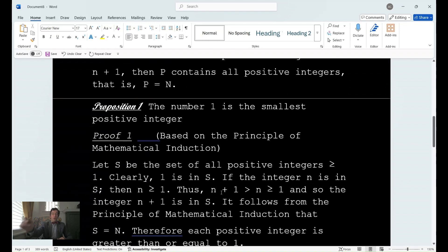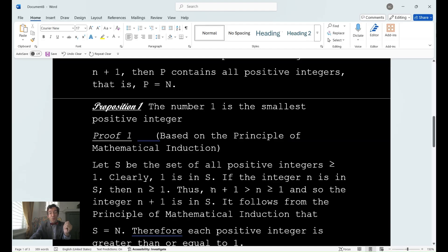And then here is the first proposition, proposition one. The number 1 is the smallest positive integer. And I give you two proofs, proof one, based on the principle of mathematical induction. Let S be the set of all positive integers greater than or equal to 1. Clearly, 1 is in S. If the integer n is in S, then n ≥ 1. Thus, n + 1 > n, and n ≥ 1. And so the integer n + 1 is in S. It follows from the principle of mathematical induction that S = N. Therefore, each positive integer is greater than or equal to 1.